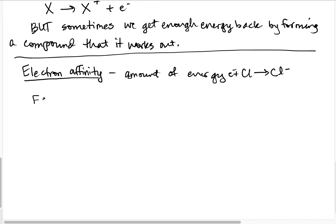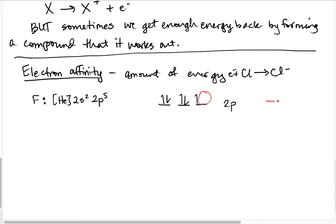Let's look at fluorine. Its electron configuration is almost neon — it's [He] 2s2 2p5, so there is one extra spot for an electron in the 2p. If we go from F to F⁻, we add one electron into that 2p spot, reaching the neon electron configuration, which has extra stability. This releases energy.